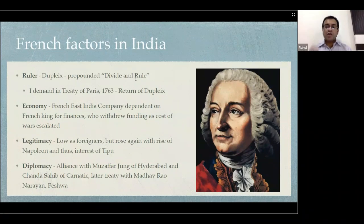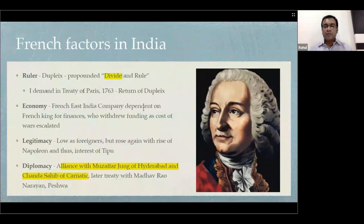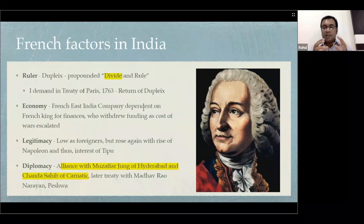But they were very strong on the diplomacy front. They had an alliance with Muzaffar Jung of Hyderabad and Chanda Sahib of the Carnatic. As mentioned, they were the first to have a policy of divide and rule, clearly making treaties with Indian rulers so they could turn them against their own countrymen — dividing Indian people by entering into treaties with some rulers and fighting wars against others.